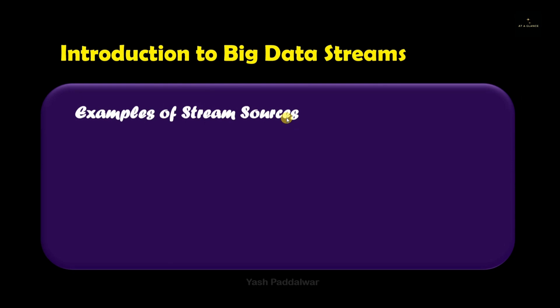Now let's move on to examples of stream sources. The first, which is very popular, is IoT sensors. For example, if you want to monitor real-time air quality from the environment, we can install sensors such as the MQ2 sensor for collecting different gases — for example hydrogen, smoke, and carbon monoxide. A single sensor wouldn't be enough; we would require thousands of sensors for accurate monitoring. Through these sensors we can collect big data that is huge in volume, real-time, and continuous.